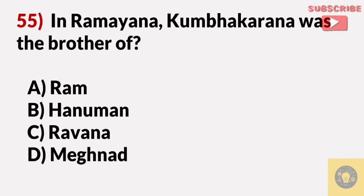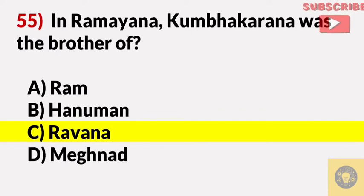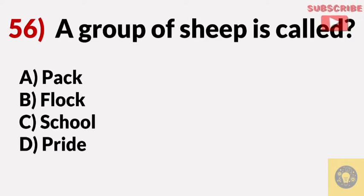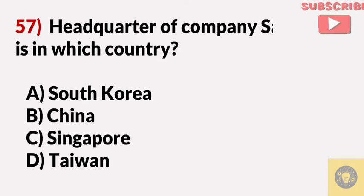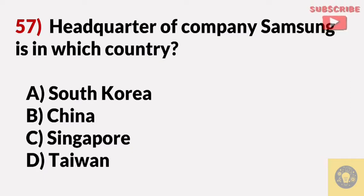In Ramayana, Kumbhakarna was the brother of? Answer C, Ravana. A group of sheep is called? Answer B, flock. The headquarters of the company Samsung is in which country? Answer A, South Korea.